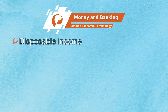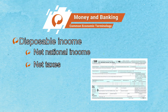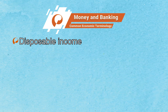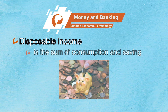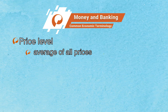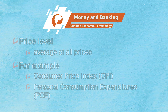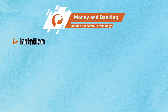Economists call disposable income, DI, the difference of net national income and net taxes. Every year, families pay a portion of their income in taxes and receive a portion as transfers from government — for example, social security pensions. Net taxes are the difference between taxes and transfers. Families spend a portion of their disposable income in consumption and save the rest. Hence, disposable income is the sum of consumption and saving. The price level is an average of all prices and is tracked using several indicators — for example, the Consumer Price Index, CPI, or the Personal Consumption Expenditures, PCE, deflator. Inflation is a continual and generalized increase in the price level.